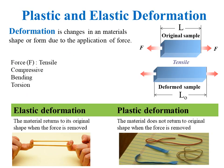When force or stress is applied on a material, its shape or size changes — this change is known as deformation. This force can be tensile, compressive, torsional, or bending. As deformation occurs, internal intermolecular forces arise that oppose the applied force. If the applied force is large enough to overcome the intermolecular forces, the material undergoes plastic deformation; otherwise, it undergoes elastic deformation.